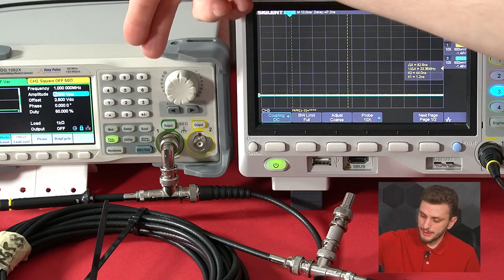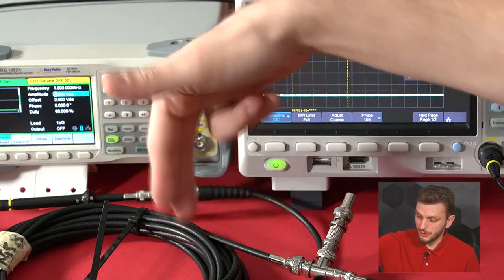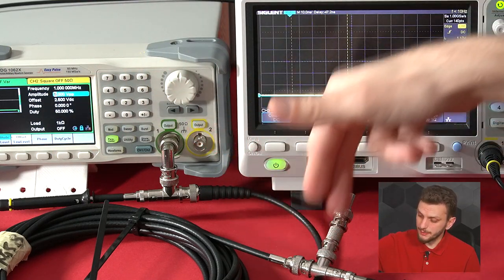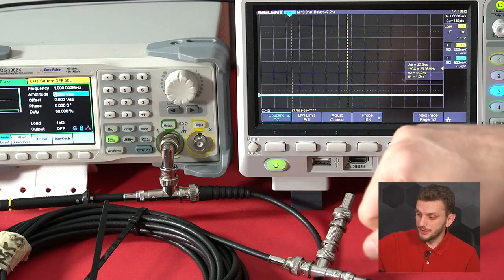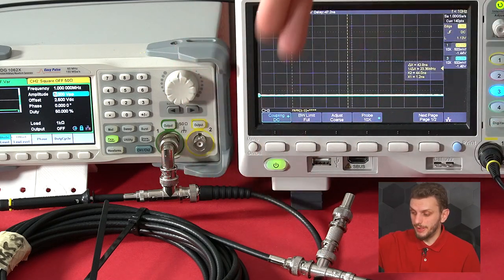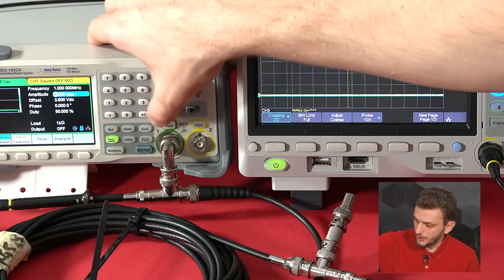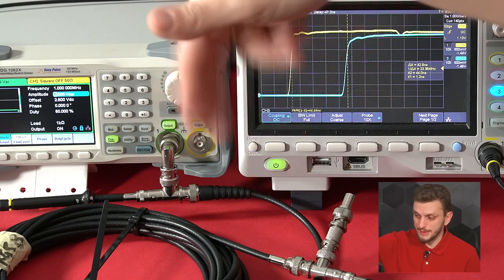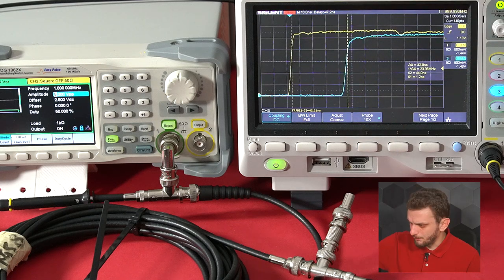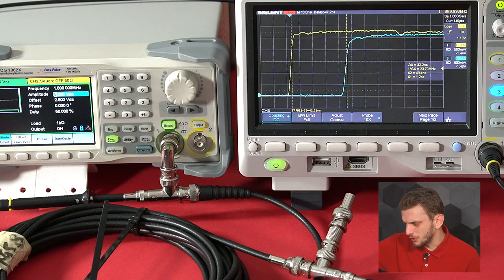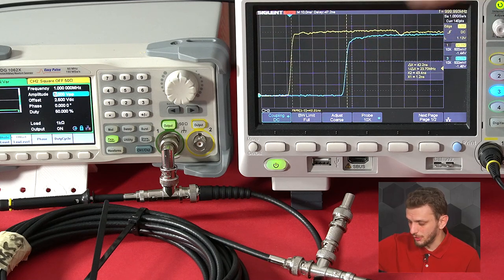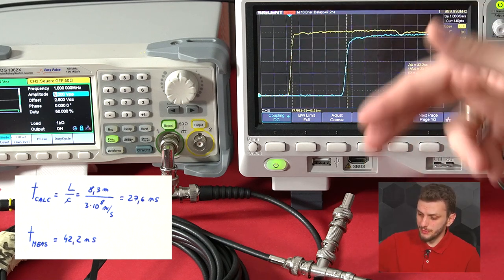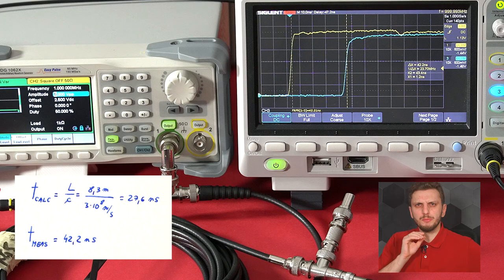To measure this, I set up a signal generator inserting a square wave into the line, measured by the first oscilloscope channel. At the other end, a 50-ohm termination and the second oscilloscope channel measure when the wave arrives. Turning on the generator, we see a delay between channel one and channel two. Using the cursors or automated measurement, we can see it takes about 42.2 nanoseconds for the square wave to travel the length of the line — a bit more than expected.